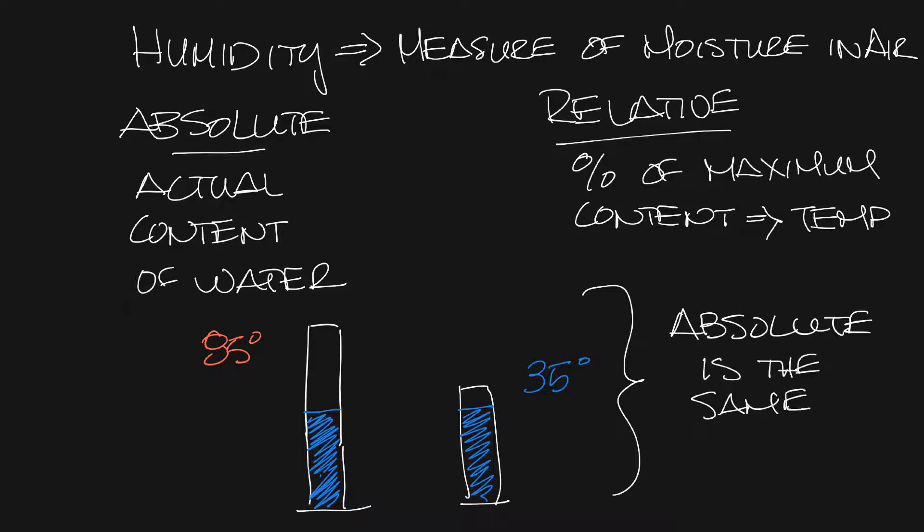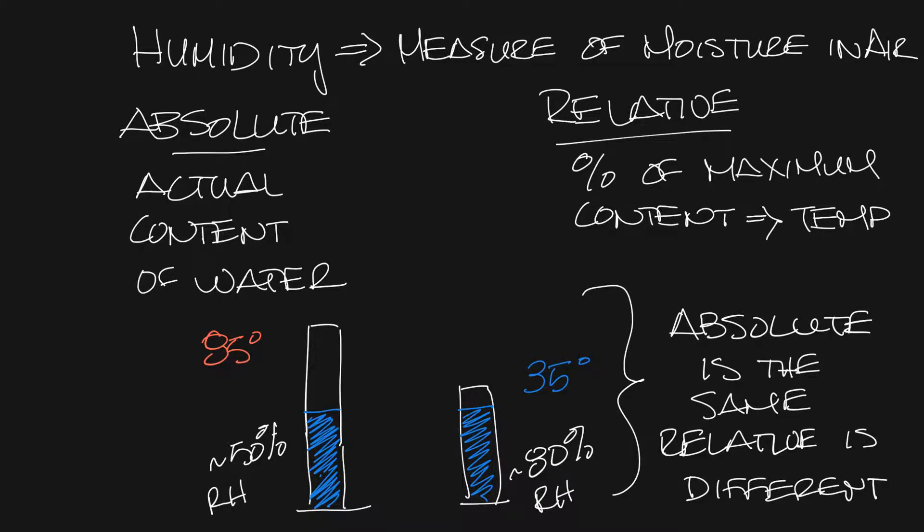The two blue areas are basically the absolute humidity. They have the same volume of water in them. But you can see as a percent of the total container it's about 50 percent relative humidity and over here it's about 80 percent relative humidity. So the relative humidity is different but the absolute humidity is the same.